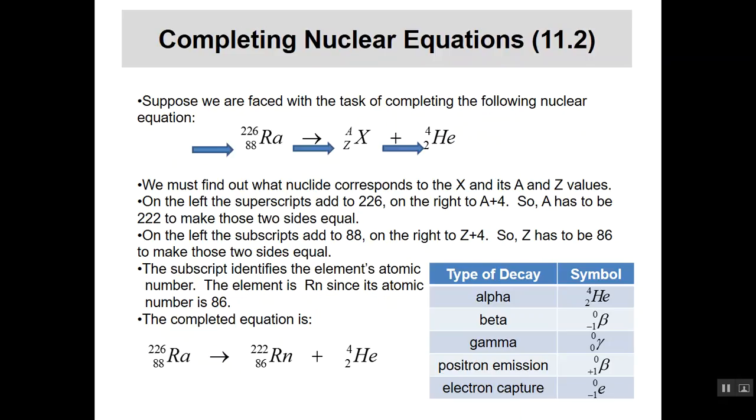Now if I look down below, what happens down below? Well, down below I have 88 on the left-hand side, and on the right-hand side, I get 2 from helium, and so the Z there, the missing Z, has to be something such that when I take Z and add it to 2, I get 88. So what number is that? That's got to be 86, doesn't it?